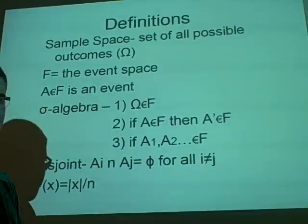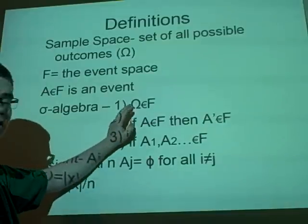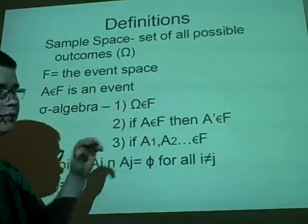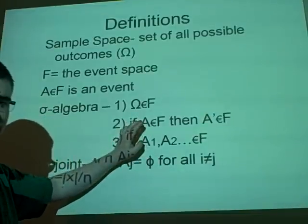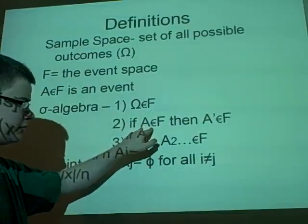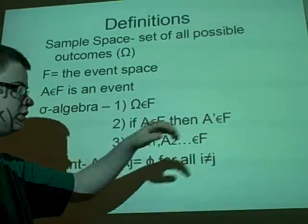Sigma algebra. Now, we know something is a sigma algebra if omega is an element of F, which is generally quite obvious. And if A is an element of F, then the inverse of A is an element of F.